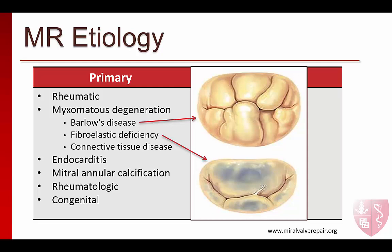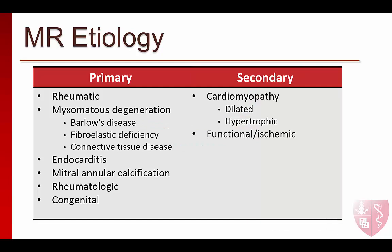Connective tissue diseases such as Marfan's, Ehlers-Danlos, Osteogenesis imperfecta, and Pseudoxanthoma elasticum, and genetic disorders such as Turner syndrome can all have Barlow's-like mitral valve degeneration associated with mitral regurgitation. Endocarditis can be caused by bacterial, viral, or fungal pathogens. It can destroy leaflet tissue causing leaflet perforations or valvular incompetence from vegetations which cause coaptation defects by impairing valve closure. Mitral annular calcification can cause both mitral regurgitation and stenosis by interfering with normal leaflet motion. Rheumatologic causes of MR include lupus, rheumatoid arthritis, and ankylosing spondylitis.